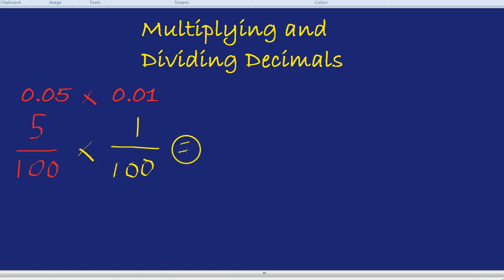That looks a lot nicer. 5 over 100 times 1 over 100. 5 times 1 is 5. 100 times 100 is 10,000. There's two 0s in 100. Two 0s in 100. So overall, there's going to be four 0s if you multiply them. 10,000. And there's your answer. 5 divided by 10,000.